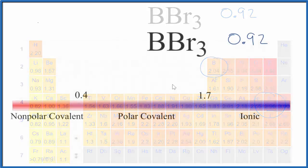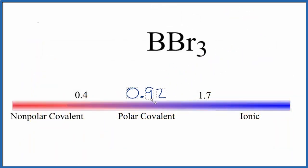Let's look at a scale to see what that means. So here's our scale, and 0.92 is right around here. This should be a covalent compound. When we're talking about the bond between boron and a bromine, the bond itself is polar covalent.